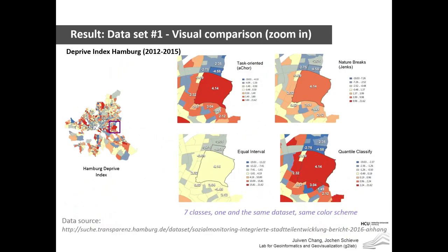In a zoom-in example: the ACOR method perfectly preserves both local maximum and local minimum. Equal interval does not preserve the local maximum well. Natural breaks preserves the local maximum but not the local minimum. Quantile preserves neither. So results depend on the dataset.